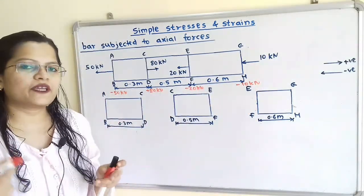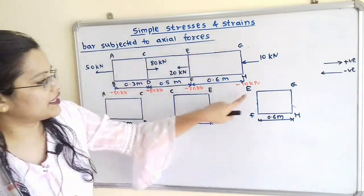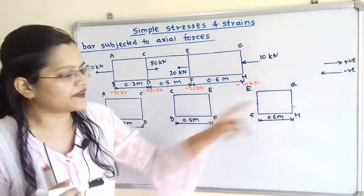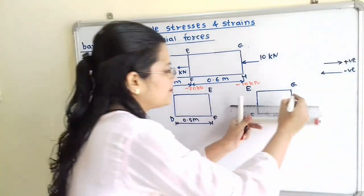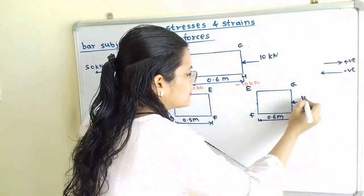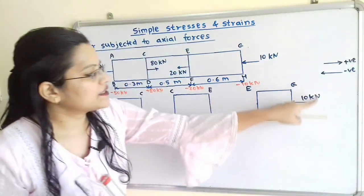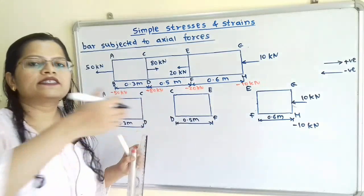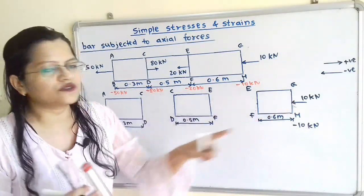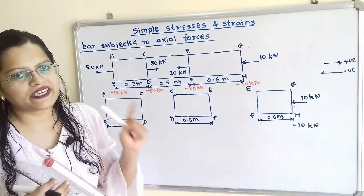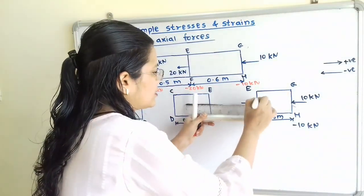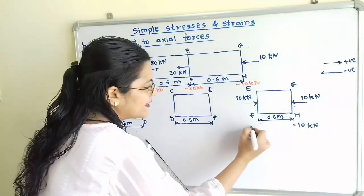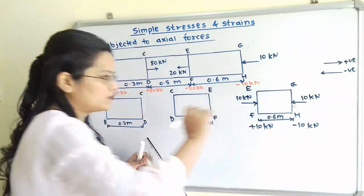Now we will move to the free body diagram. We will consider section EFGH. We have to show the 10 kN force on section GH, and its direction is also mentioned. The magnitude is with minus sign, so minus 10 kN. This body is in equilibrium, so to balance this force, we have to show a force with same magnitude but opposite direction — that is 10 kN towards the right hand side, so plus 10 kN.